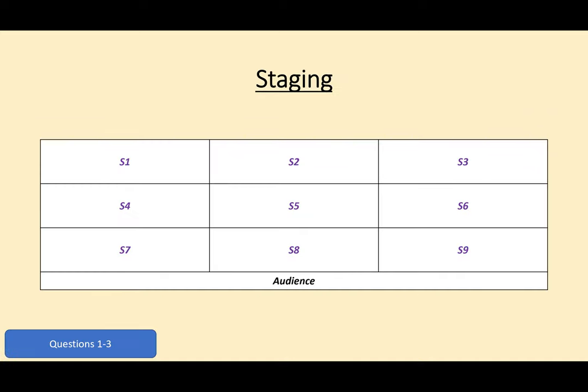Our first round for Section A is going to be on staging and things to do with staging a piece of theatre. Questions 1 to 3 are going to be based on the image that you can see in front of you — basically a stage diagram, where references S1 to S9 are positioned in different squares along that stage, representing different positions. Using the correct staging terminology, question 1: where is the grid reference S1 positioned on the stage diagram?